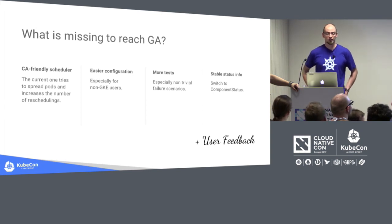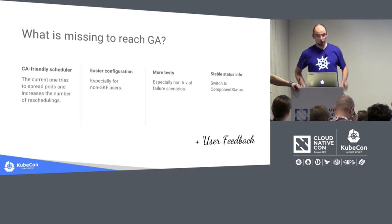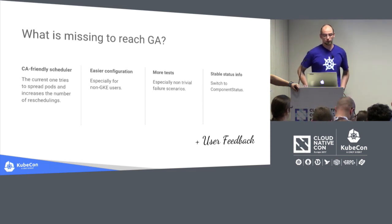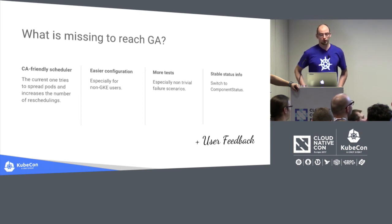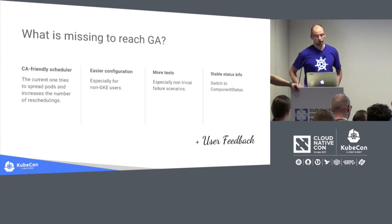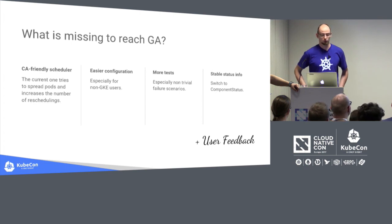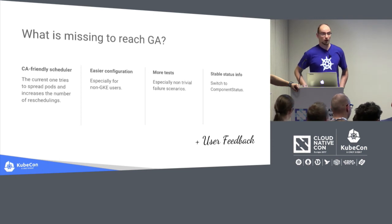We also need more tests for non-trivial failure scenarios. Cluster autoscaler has to make many assumptions about how Kubernetes works under the hood. We want to cover it all in continuous integration tests so it is rock solid. We run manual tests but they don't catch occasional issues, like the one with new pods and networking found at the very last minute before the 1.6 release — which forced us to ask you to wait until 1.6 before trying cluster autoscaler. We don't want this to happen again.